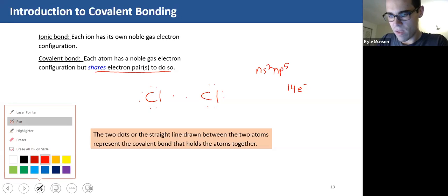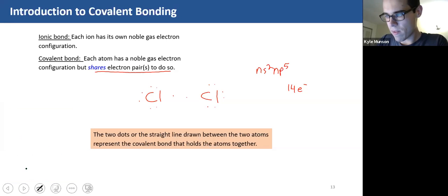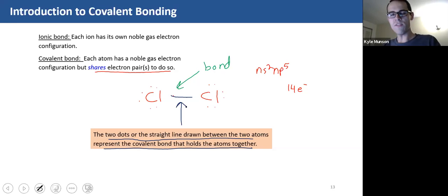So this, write it maybe in green, bond. So what a bond is normally represented by, and we've already seen a little bit in this class, is a straight line. And when you see a straight line that represents two electrons that are shared between these atoms. So two dots or a straight line drawn between the two atoms represent the covalent bond that holds the atoms together.